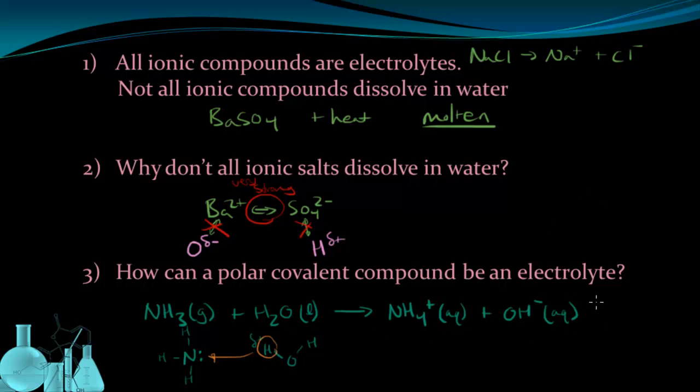And now we have ions in solution. And these ions, just like these ones up here, are able to conduct electricity. And that's what makes NH3 an electrolyte. Because dissolving it in water resulted in the formation of ions. And those ions allow electricity to be conducted.